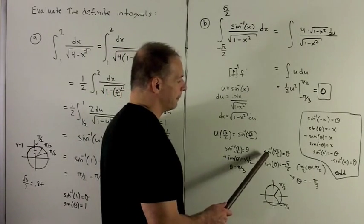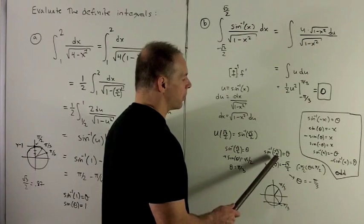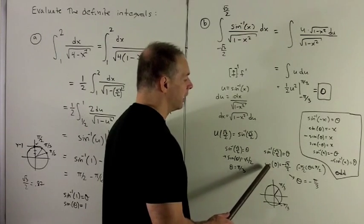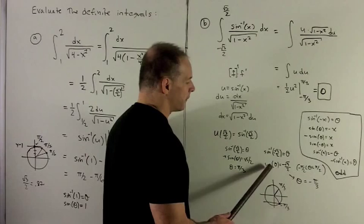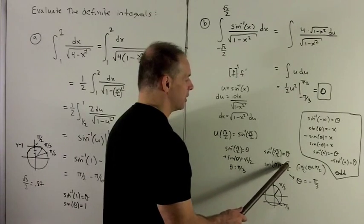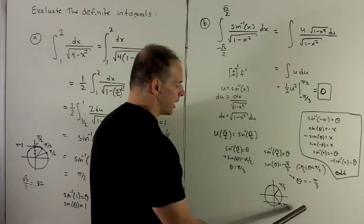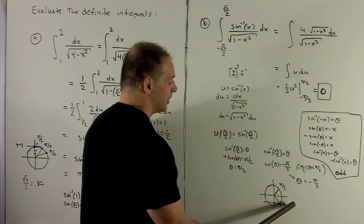For the other limit, sine inverse of minus square root of 3 over 2, set that equal to theta. We rewrite it. So we're looking for the y value that's equal to minus radical 3 over 2. So that's going to be below the x-axis. Same angle, except we're going in the other direction.